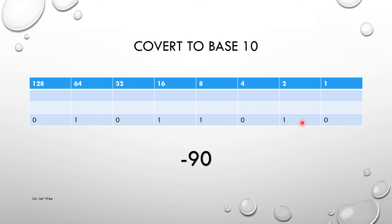So 64 plus 16 plus 8 plus 2 equals 90. But remember, in the original question the first bit is a one, which indicates it is a negative number. So it is not just 90 — it is negative 90. That is why I put a negative symbol there. The original string started with a one bit in the most significant position, so the final answer is negative 90.